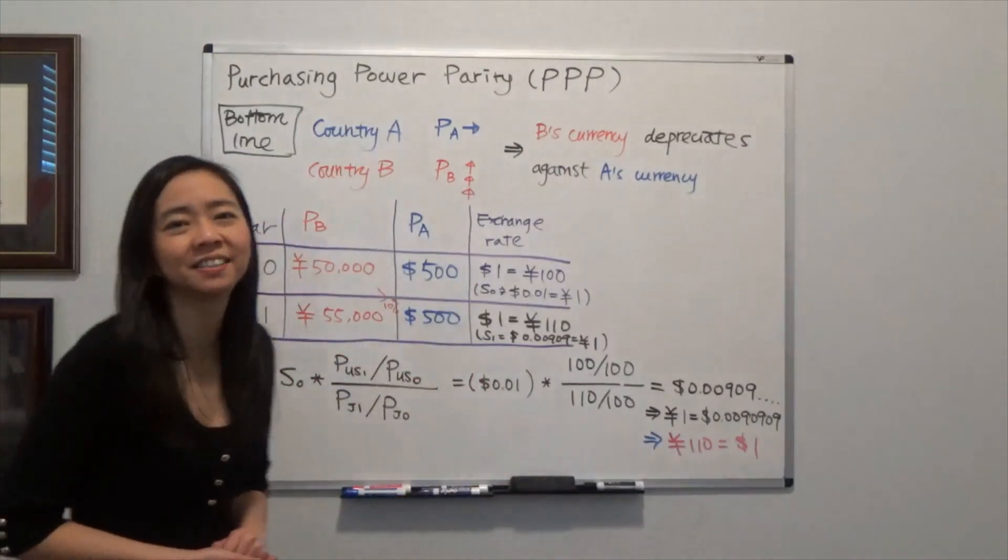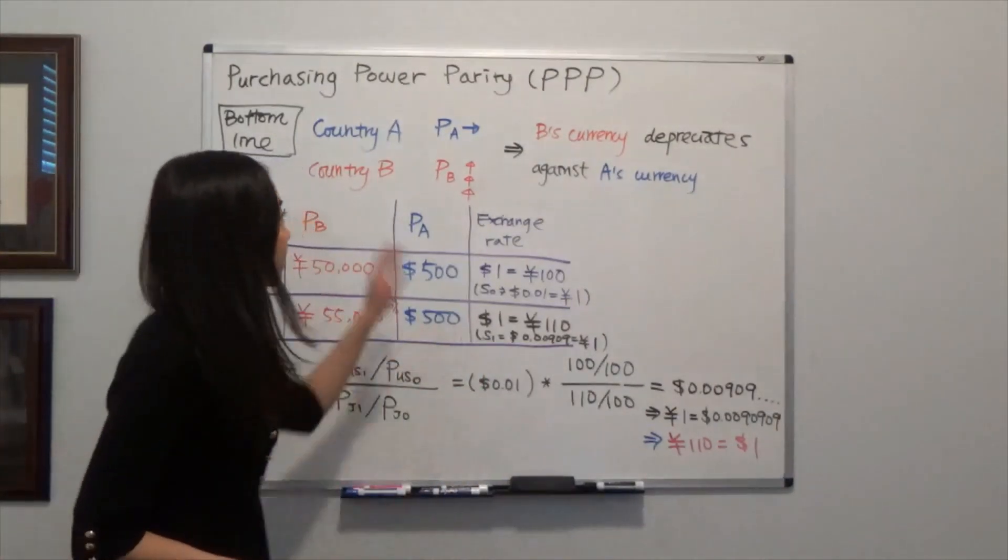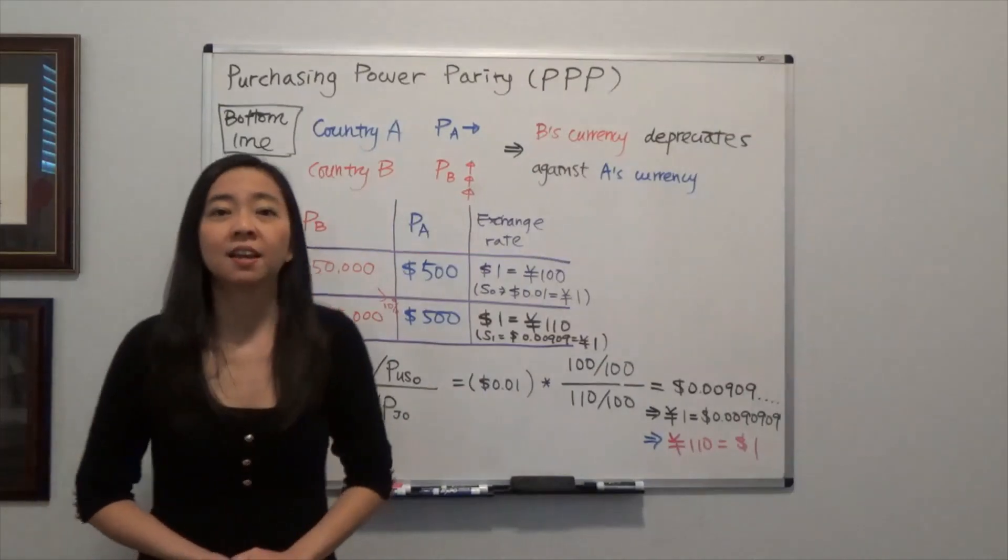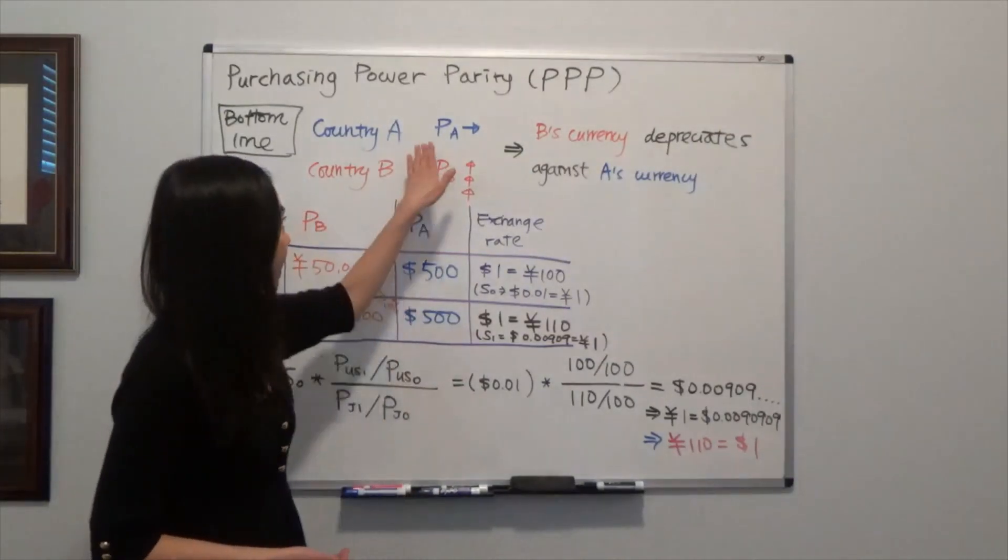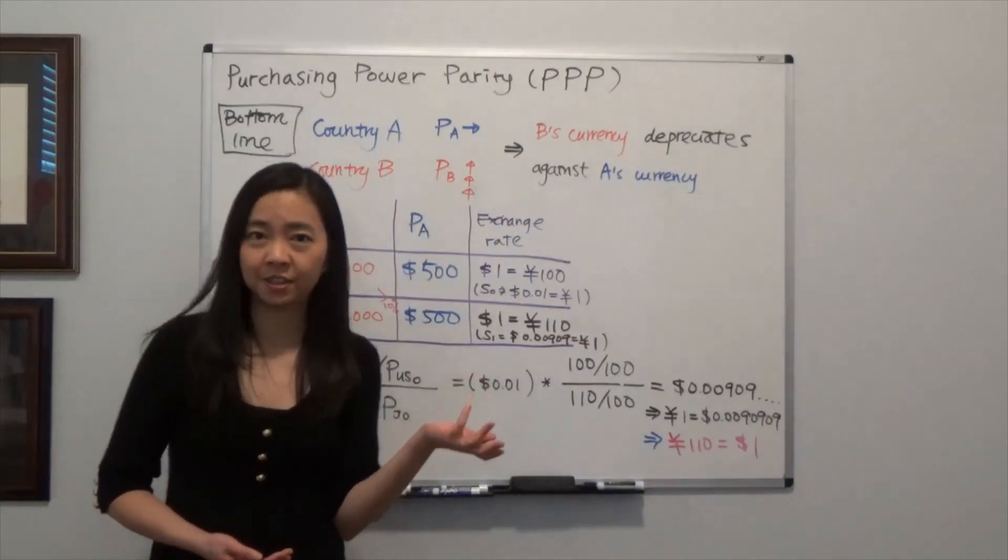Now bottom line first, here is the idea. Suppose you have two countries, country A and country B. Now suppose the price level in country A is stable, there is no inflation there.